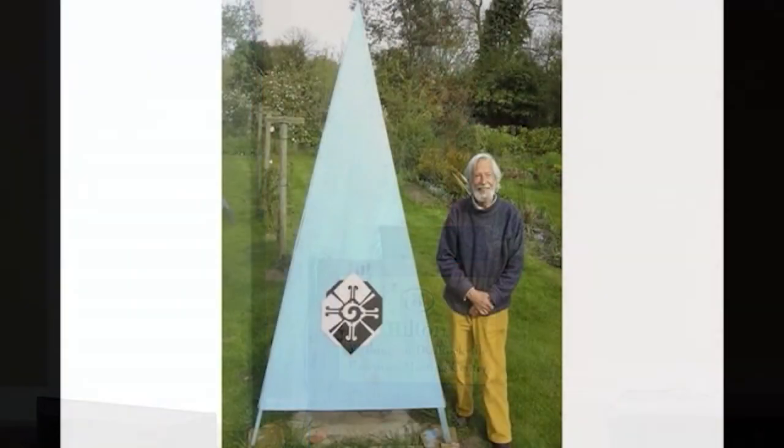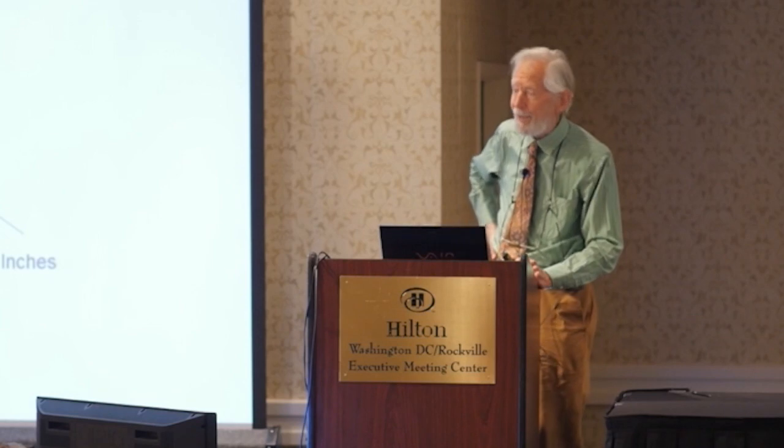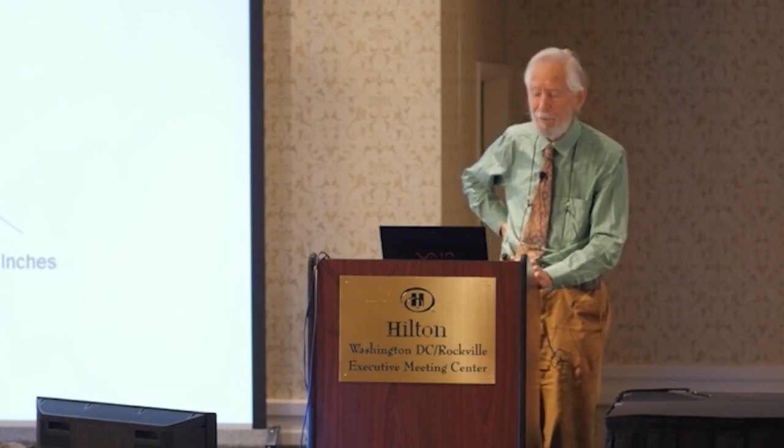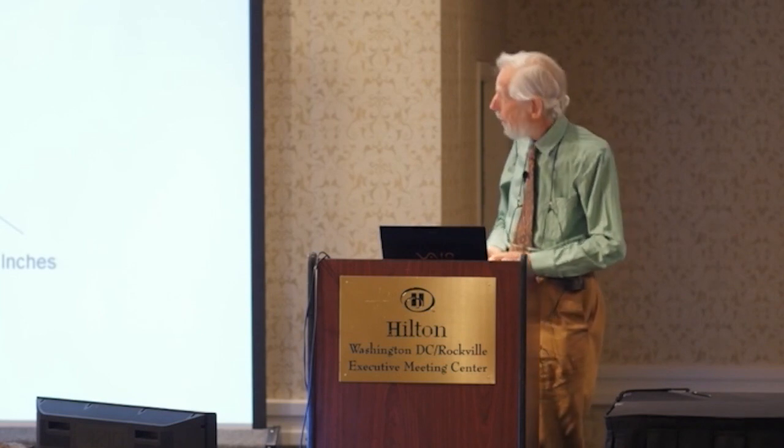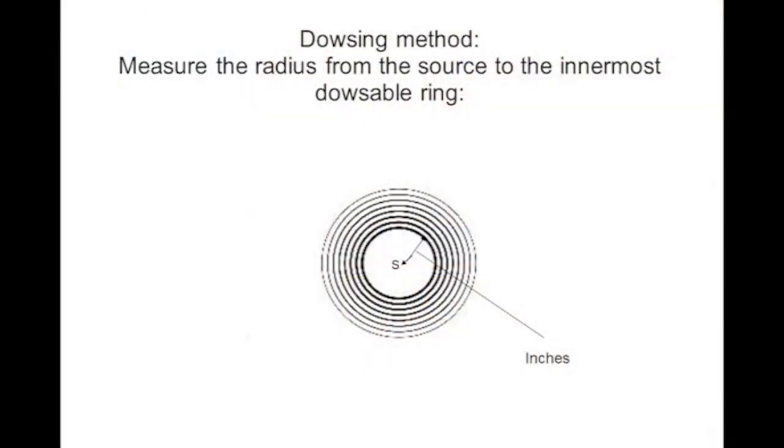I also have one based only on geometry. This is how I developed a quantitative method of dowsing. What I find is, using dowsing rods and walking towards the source, I find a series of rings where the rods come together, and between the rings they open up again. Then finally, there's a gap before you get to the source where they come together again.